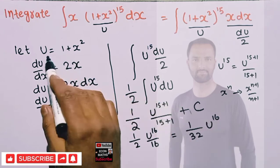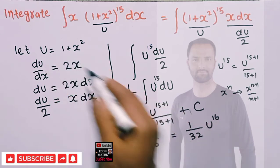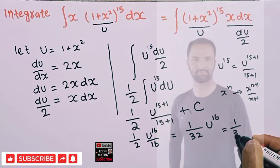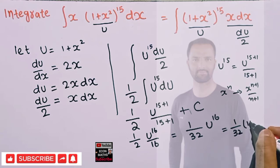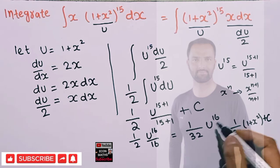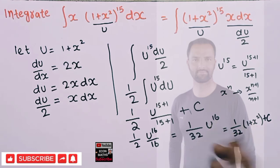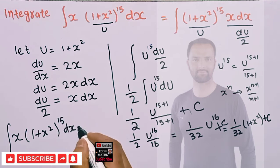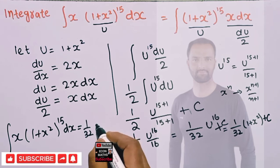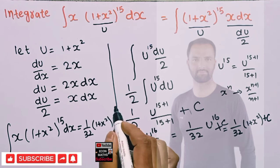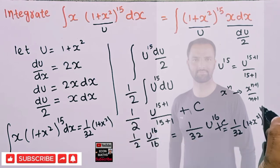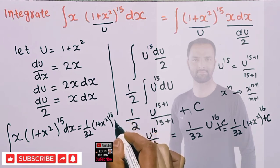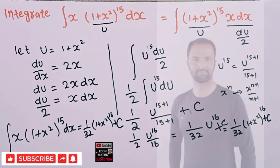Now we back-substitute: u was 1 plus x squared, so in place of u we write 1 plus x squared. The final answer is 1 upon 32 times (1 plus x squared) to the power 16, plus the constant of integration c. So the integral of x times (1 plus x squared) to the power 15 dx equals 1 upon 32 times (1 plus x squared) to the power 16 plus c. I hope I made myself clear in this video, thank you.